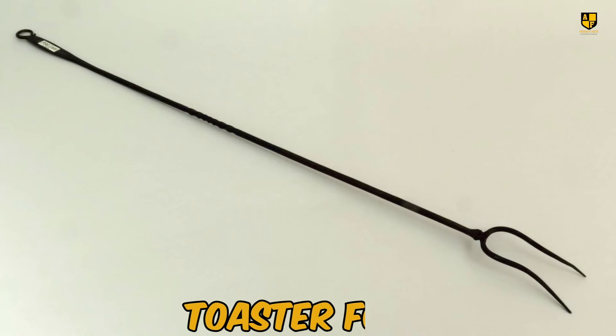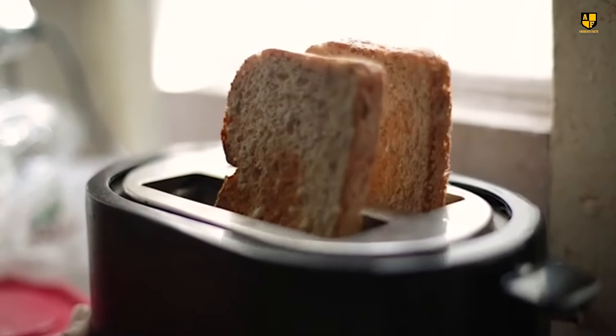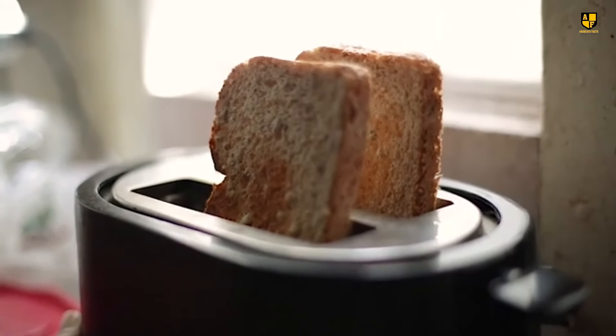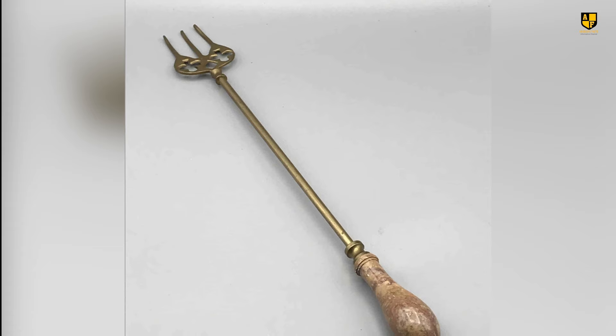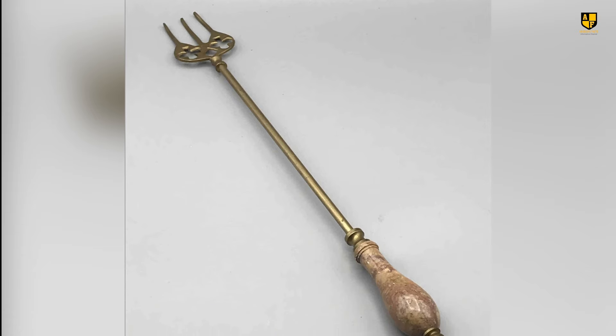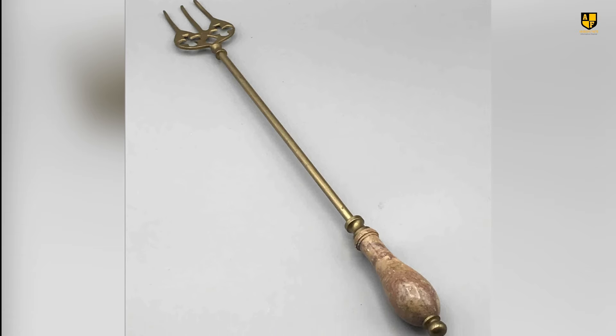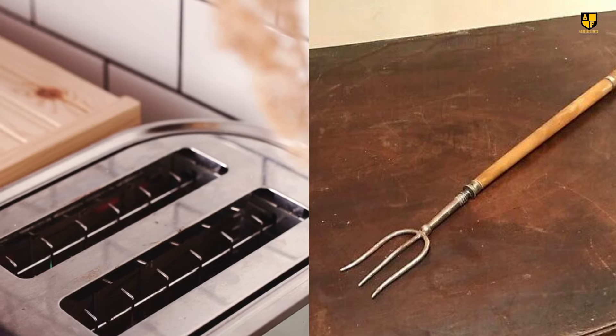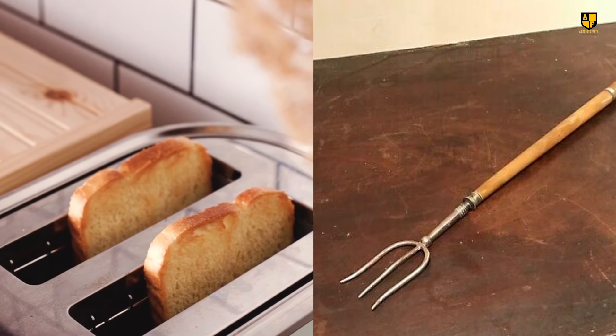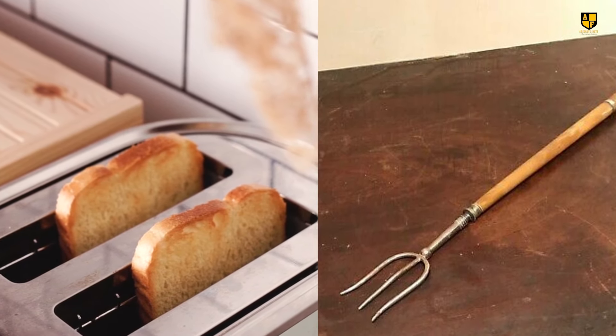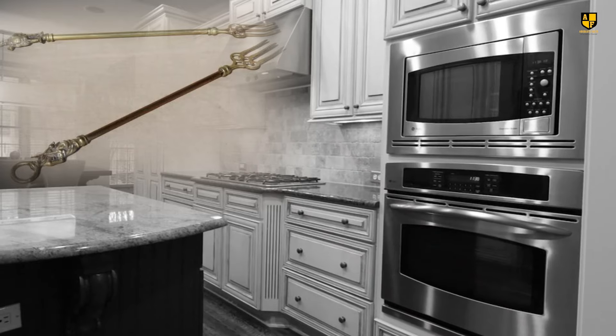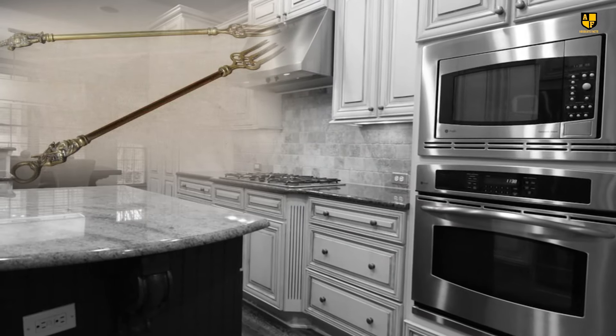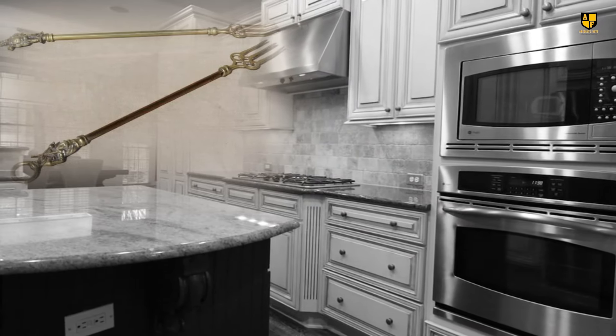Number 5. Toaster Fork. Toasted bread was a beloved breakfast staple long before the invention of electric toasters. That's where the toaster fork came in, a trident-shaped tool designed for toasting bread over open flames or embers. With its shiny, eccentric appearance, the toaster fork might be mistaken for a superhero's weapon today. But in its time, it was an essential kitchen gadget, delivering perfectly crispy golden brown toast to households everywhere.